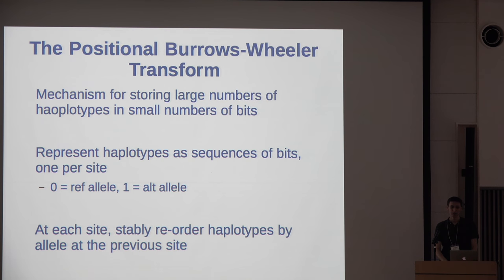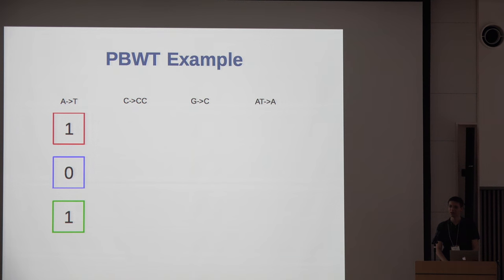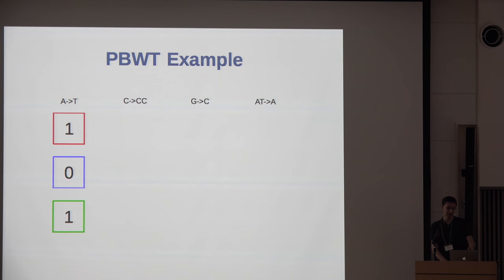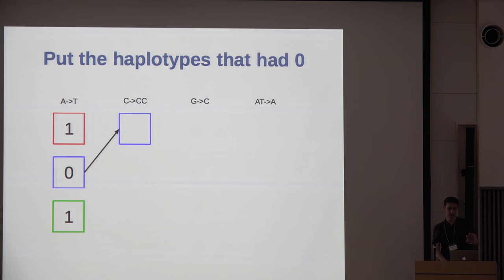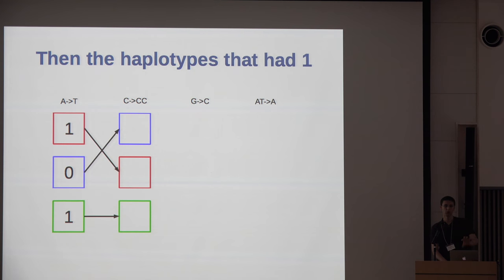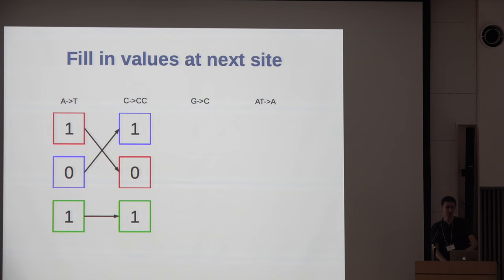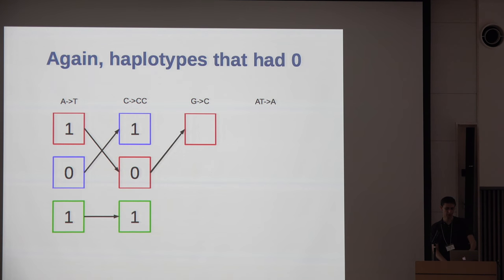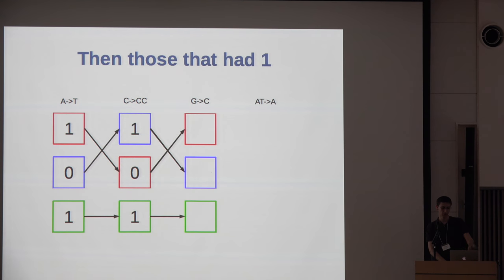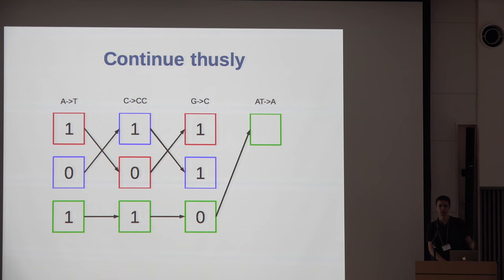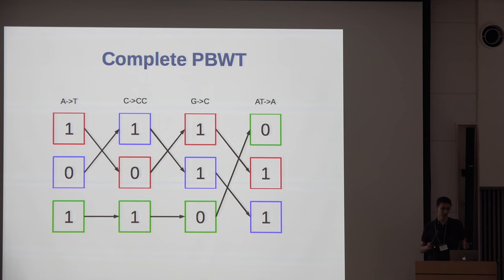Let me show a demo. Here are our three haplotypes: red, blue, and green, with a few different sites in our example genome. You start them in any order and put down their values — red has the T, blue has the A, and green has the T. Then you put the zeros first in the ordering for the next site, then all the ones. This is a stable sort, so since red came first before, red is still first now. You fill in the values for that site, reorder again — zeros first, then ones — fill that in, and continue across the whole chromosome. This generates the positional Burrows-Wheeler transform.